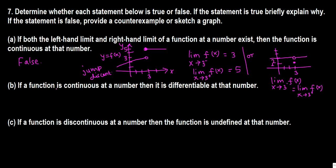Part B: If a function is continuous at a number, then it is differentiable at that number. Does continuity at a number imply differentiability? No. We have seen in section 2.8 that when we have a corner point — like the graph of the absolute value function — at some point, say x equals 2, the derivative does not exist because it is a corner point. This function is continuous since the left-hand limit, right-hand limit, and function value are all equal, but the derivative does not exist. So Part B is also false.